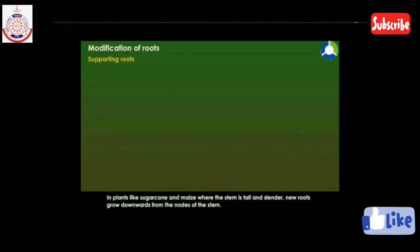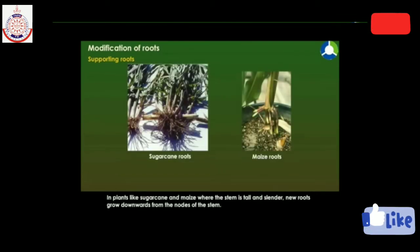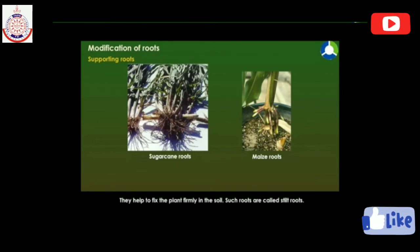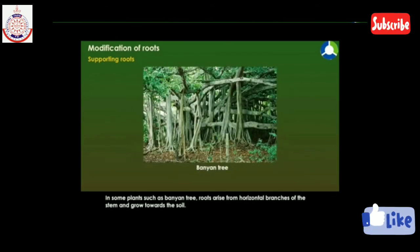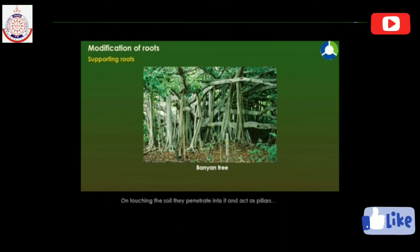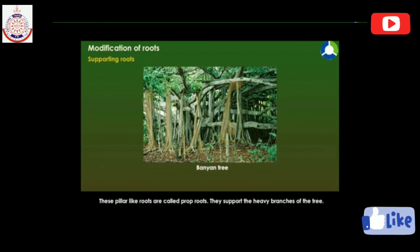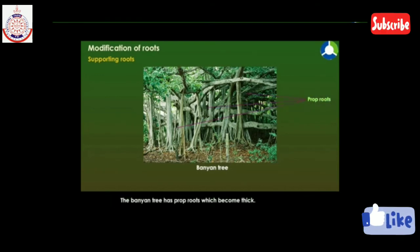Supporting roots: in plants like sugar cane and maize, where the stem is tall and slender, new roots grow downwards from the nodes of the stem. They help to fix the plant firmly in the soil. Such roots are called stilt roots. In some plants such as the banyan tree, roots arise from horizontal branches of the stem and grow towards the soil. On touching the soil, they penetrate into it and act as pillars. These pillar-like roots are called prop roots. They support the heavy branches of the tree. The banyan tree has prop roots which become thick — they look like additional tree trunks and the tree looks like a lot of trees put together.